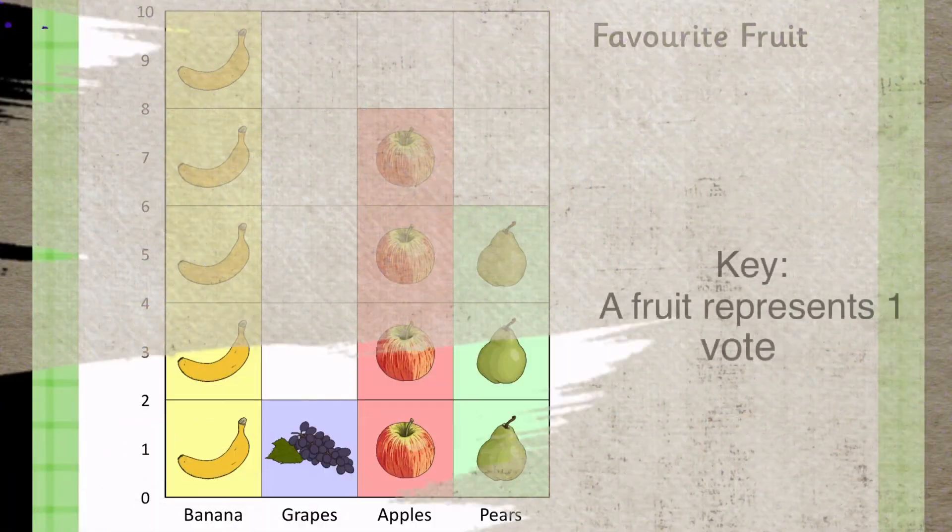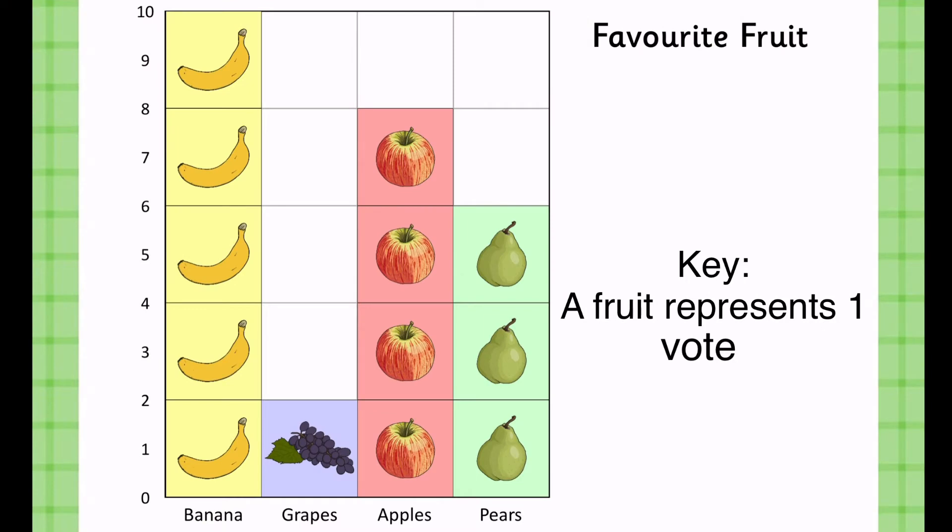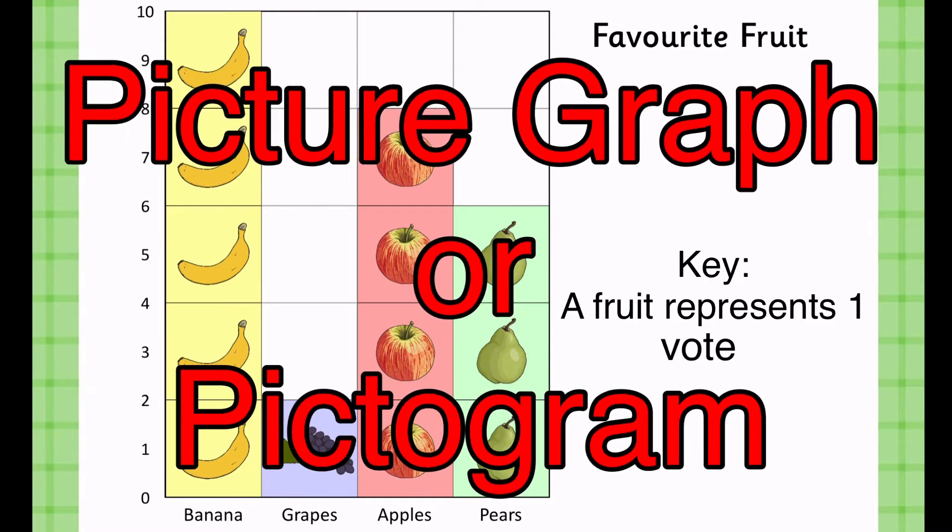Look at this one. Is this an example of a bar graph? Vertical, horizontal bar graph? No, this is not a bar graph because we call this kind of graph, picture graph or pictogram.